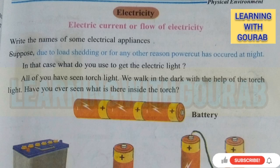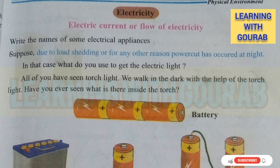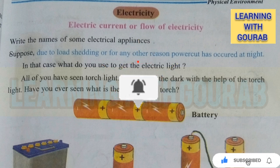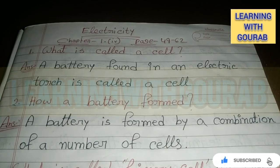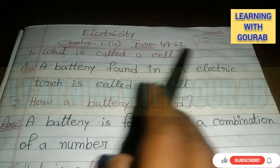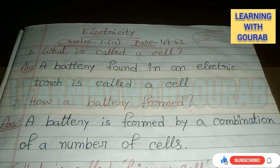Hello friends, welcome to my YouTube channel Learning with Gorop. In this video I will discuss West Bengal Board English medium Class 7 Science Chapter 1.4 Electricity — all important questions and answers. Watch the full video. If anyone is watching my video for the first time, subscribe to my channel and press the bell icon for further notifications. Let's start: Class 7 English medium Science Chapter 1.4, page number 49 to 62, Electricity.